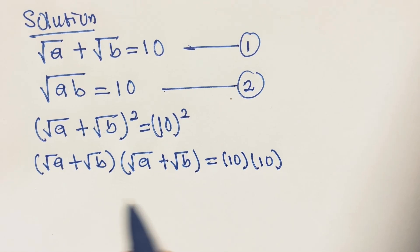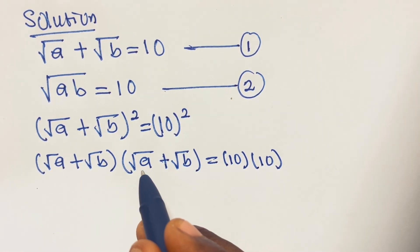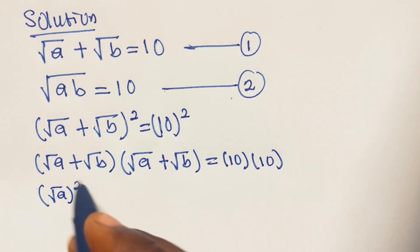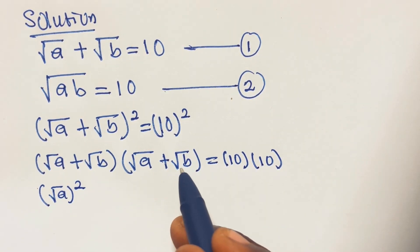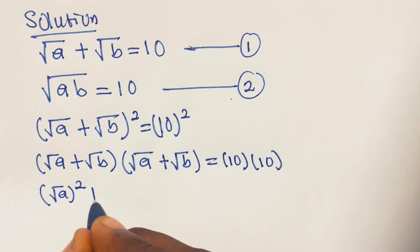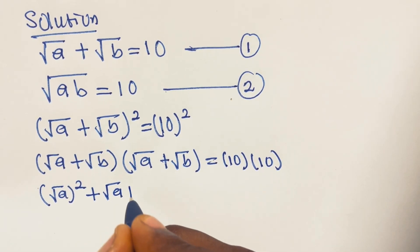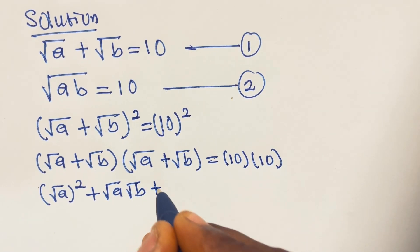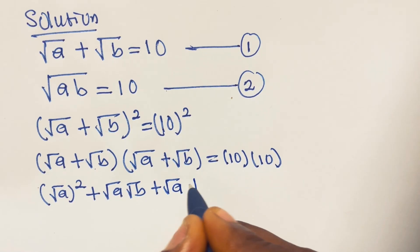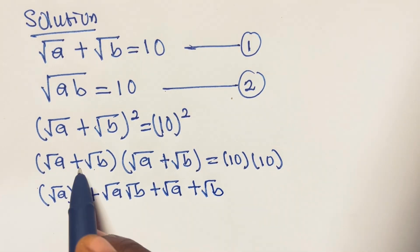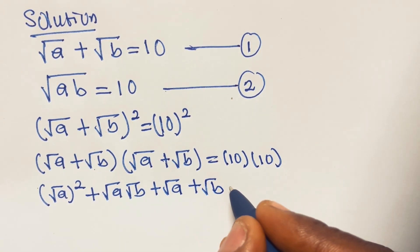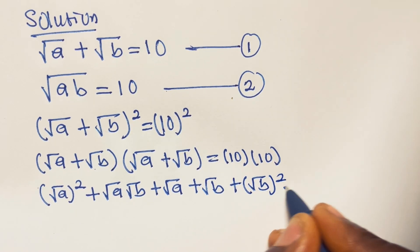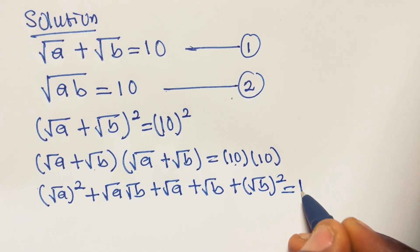Expanding this bracket, we have: square root of a times square root of a, plus square root of a times square root of b, plus square root of b times square root of a, plus square root of b times square root of b, equals 10 multiplied by 10, which is 100.